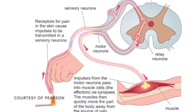Let's go through this example in detail to summarize what we learned. In this example, the fire acts as the stimulus and the receptors for pain in the skin cause impulses to be transmitted in a sensory neuron. Then the impulses from the sensory neuron are passed down to the relay neuron in the spinal cord via the synapses. The relay neuron connects the sensory neuron to the motor neuron, and the impulse is therefore transferred from the relay neuron into the motor neuron.